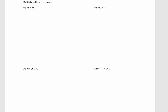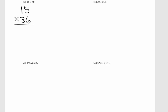First, I'm going to write this vertically. So now let's take 5 times 6. 5 times 6 is 30 — the 0 is written down, carry the 3. 1 times 6 is 6, plus 3, that's 9.